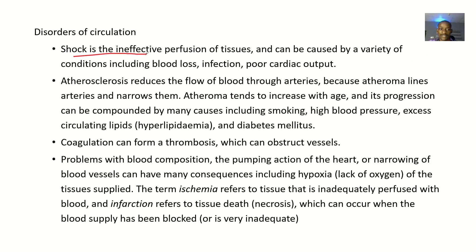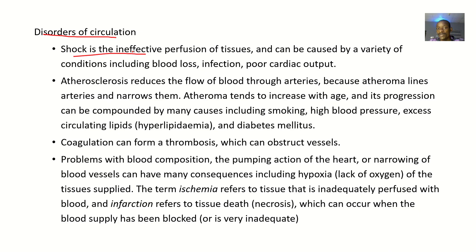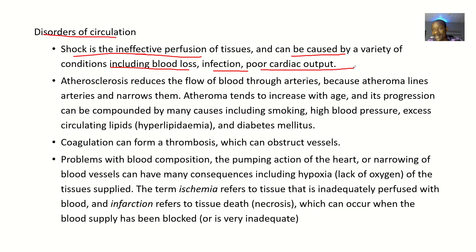The first disorder of circulation we have is shock. Shock occurs when an organ is not receiving enough blood as it used to. Shock is an ineffective perfusion of tissues or organs, and it may be caused by a variety of conditions including blood loss, infection, or poor cardiac output.